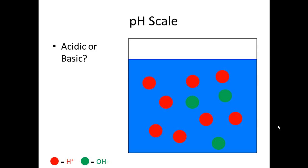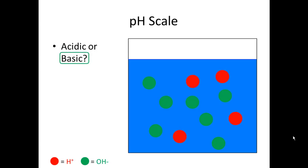Looking at a container filled with water with some acid and base: in the legend, protons are in red and hydroxide ions are in green. When you see more red, there are more protons — that's acidic. When we switch to more green hydroxide ions, the solution is more basic.